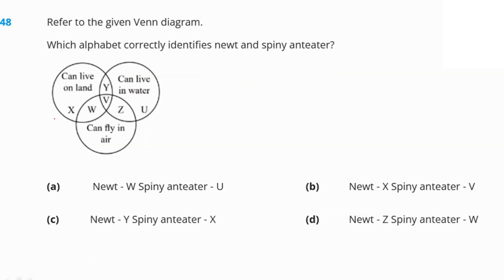Referring to the given Venn diagram: select the alphabet that correctly identifies newt and spiny anteater. A newt lives in both land and water, so it is at Y (the intersection). A spiny anteater lives on land, so it is at X. Option C is our right answer.